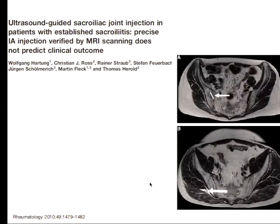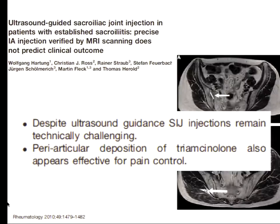Another study examined ultrasound-guided sacroiliac joint injection in patients with established sacral iliitis, verified with MRI. Should we be doing MRI scans for everybody? Probably not. But one interesting outcome was that despite ultrasound guidance, SI joint injections remain technically challenging — as you all know, even with fluoroscopic guidance it is sometimes really challenging. That's one important point to remember.